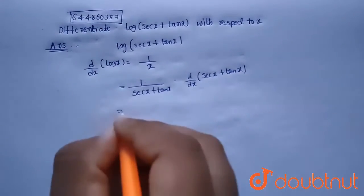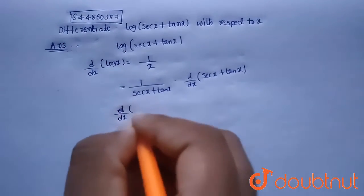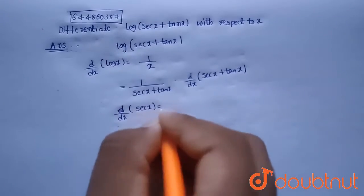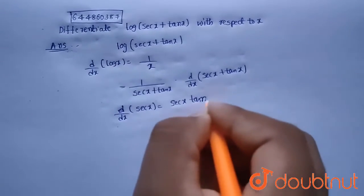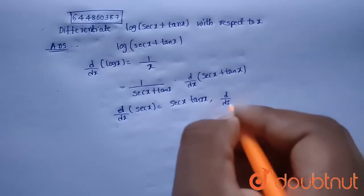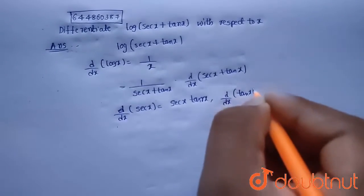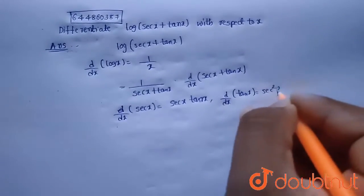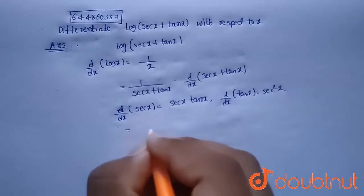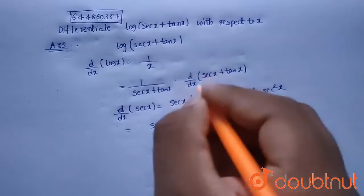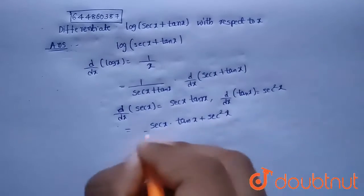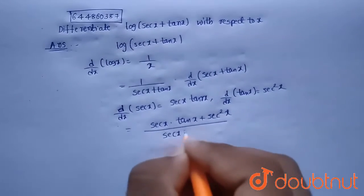So that will be equals to, and we know the derivative of secant x is nothing but secant x into tan x, and derivative of tan x is nothing but secant square x. So by using this, the derivative of secant x will be secant x into tan x plus derivative of tan x will be secant square x divided by secant x plus tan x.